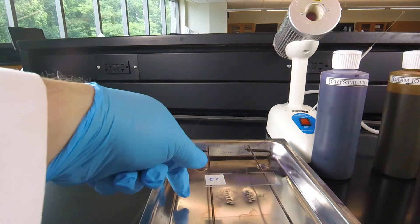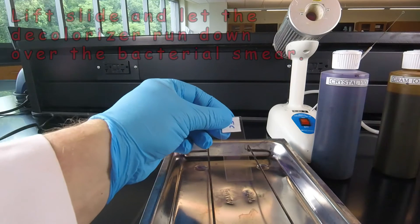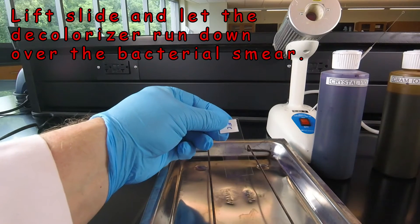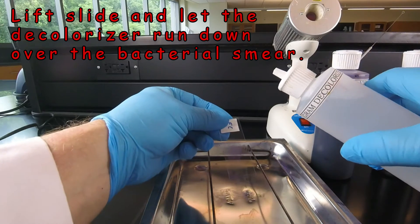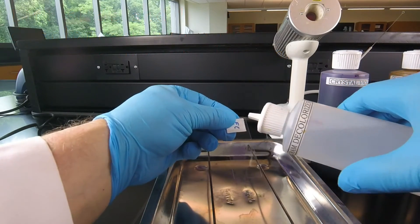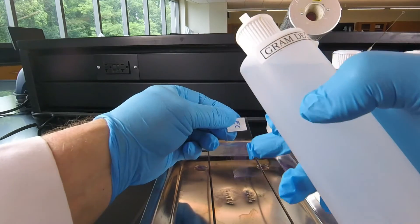So when we're ready to decolorize, we again pick up the slide, we hold it at an angle over the staining tray. We're going to take our decolorizer and run it back and forth over the slide above the smear and let it run down over the smear.